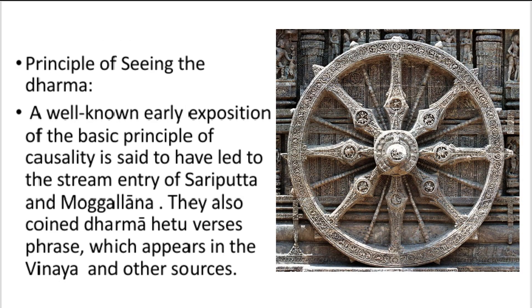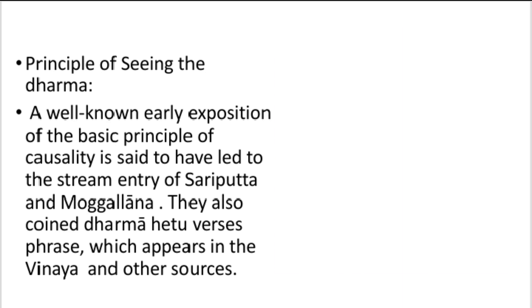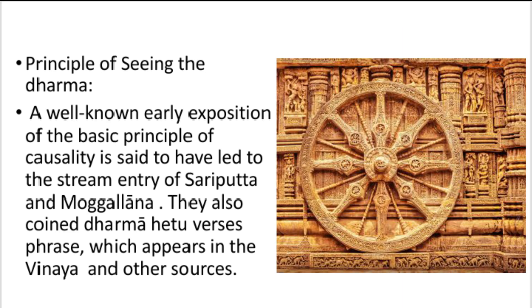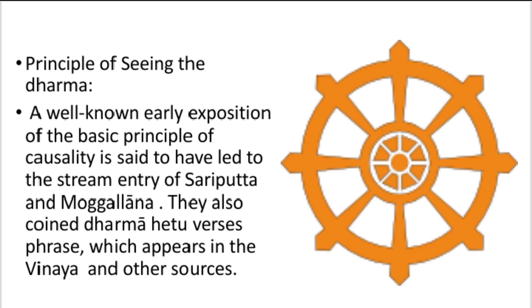The seventh principle is seeing the dharma. According to this principle, dependent origination was put forward into the mainstream by Shāriputra and Mahāmoggallāna, who were principle followers of Buddhism. The dharma-hetu verses are found within the Vinaya and other sources, which also describe dependent origination and causation.